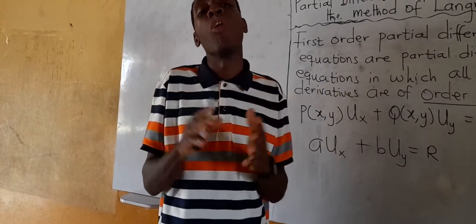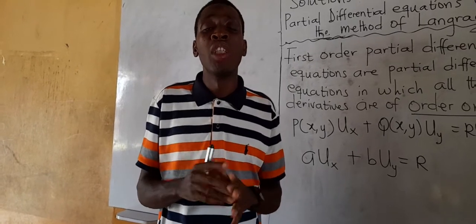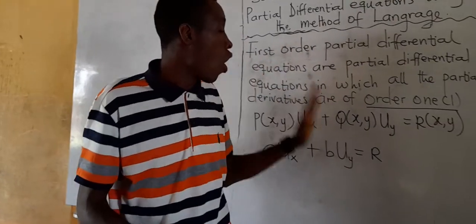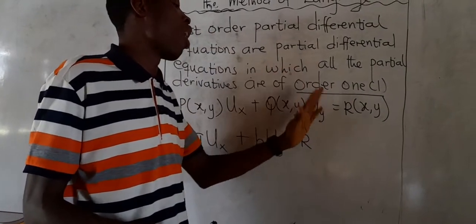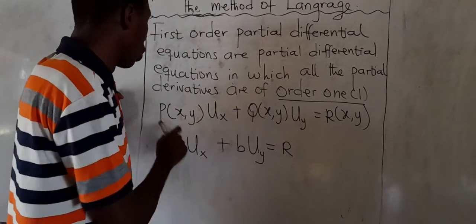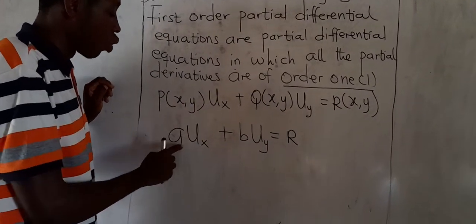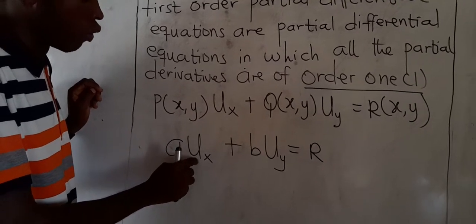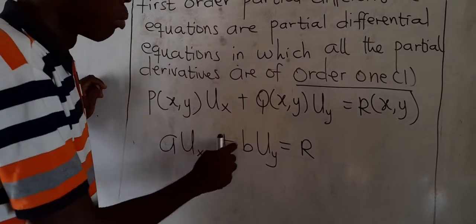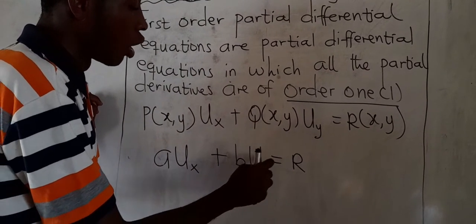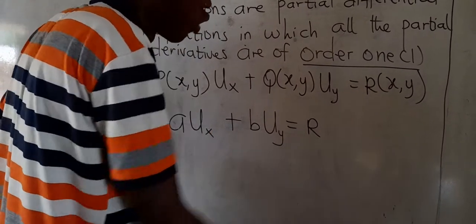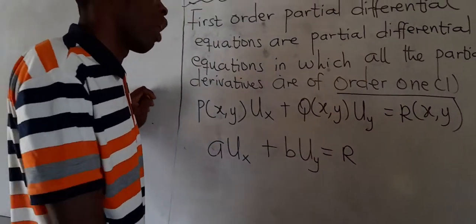If you have not watched any of those videos, please go to YouTube, search for TTJ KFC Richard, and watch those videos. So, all the partial derivatives are of order 1. They take a form like this: if we let P, a function of X and Y, be A, then A times the partial derivative of U with respect to X, plus B times the partial derivative of U with respect to Y, equals some function R. Here B is a constant or a function of X and Y, and the dependent variable is U.